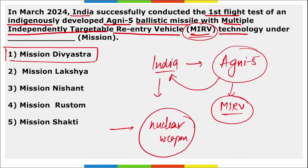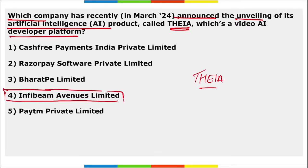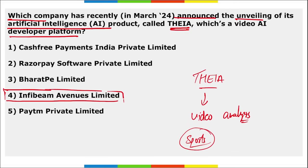Next: which company recently announced the unveiling of its artificial intelligence product Thia — a video AI developer platform? It was launched by Infibeam Avenues Limited. Thia is a video AI developer platform that empowers organizations to harness the power of artificial intelligence, providing detailed video analysis for use cases such as sports analysis, media optimization, and traffic management.